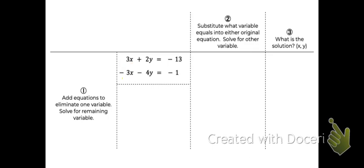So the first step is to add the equations to eliminate one of the variables. When you're adding the equations, you're looking at the columns. So if I add these x's together, notice that they cancel. If I add the y's together, positive 2y's minus 4y's is negative 2y's. You're adding the coefficients, making sure you're paying attention to whether it's positive or negative. And if I add these constants together, it's negative 14.